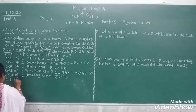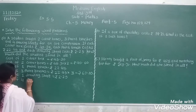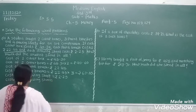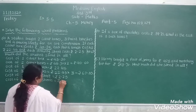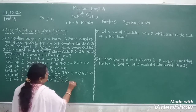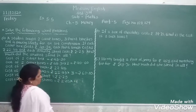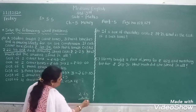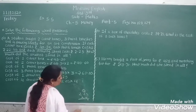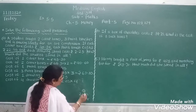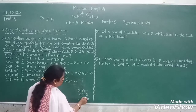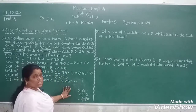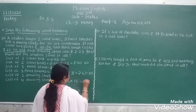Now we write the cost of four drawing sheets: Rs. 2.25 paise multiplied by 4. Calculating: 4 fives are 20 — write 0, carry 2. 4 twos are 8 and 2 is 10 — write 0, carry 1. 4 twos are 8 and 1 is 9. So the cost of four drawing sheets is Rs. 9.